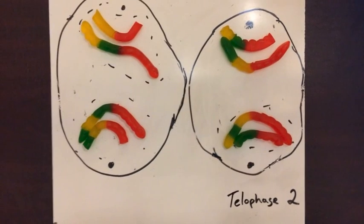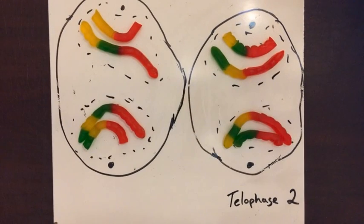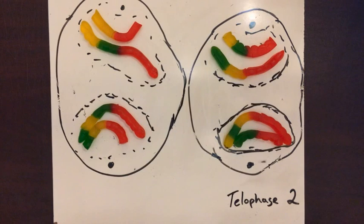In this phase, telophase II, the nuclear membranes appear around each chromosome set and the cleavage furrows begin to appear.